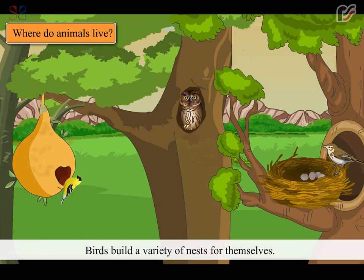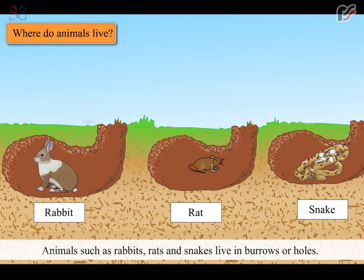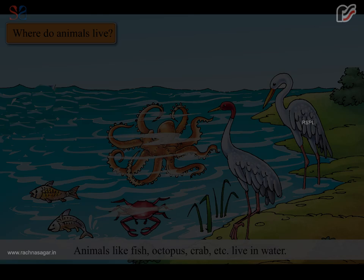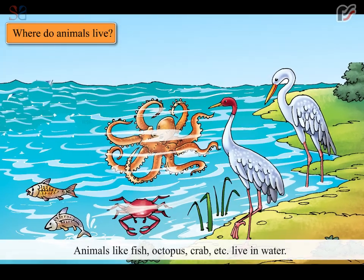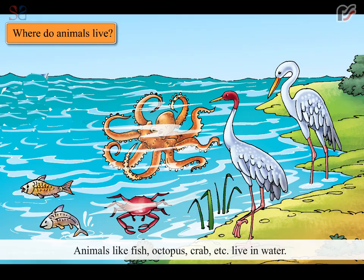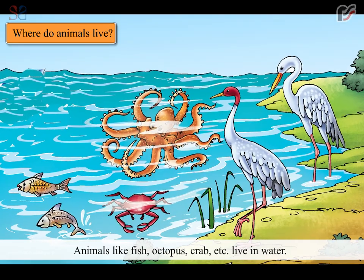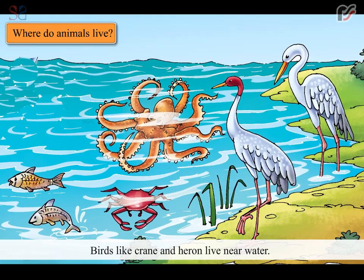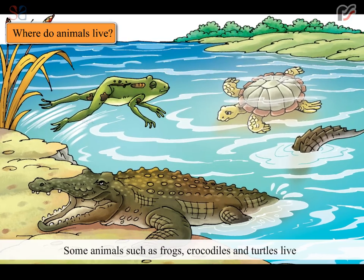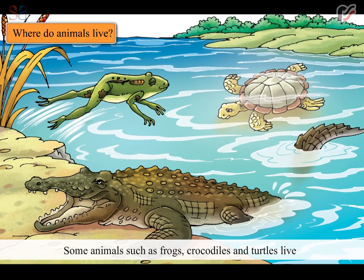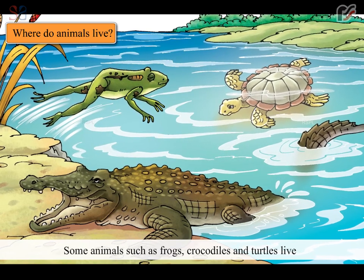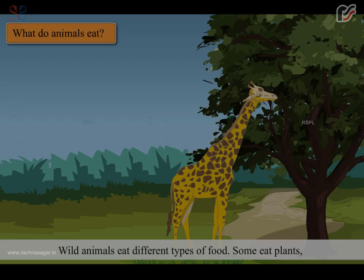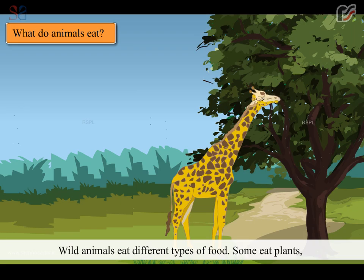Birds build a variety of nests for themselves. Animals such as rabbits, rats and snakes live in burrows or holes. Animals like fish, octopus, crab etc. live in water. Birds like Crane and Heron live near water. Some animals such as frogs, crocodiles and turtles live both on land and in water.